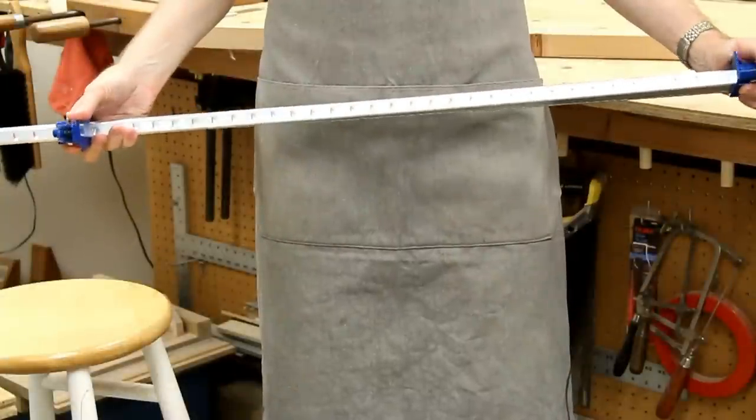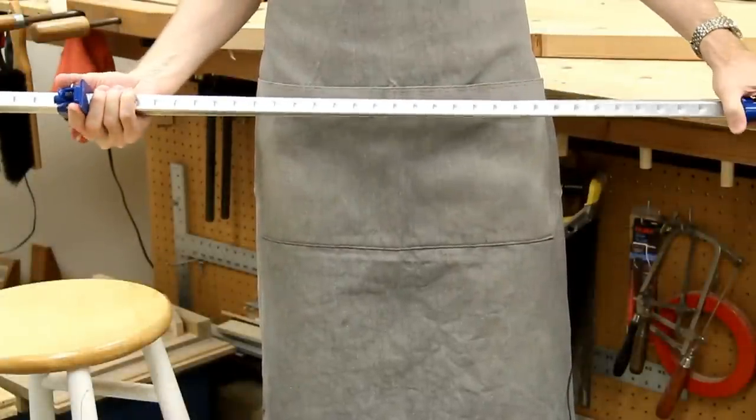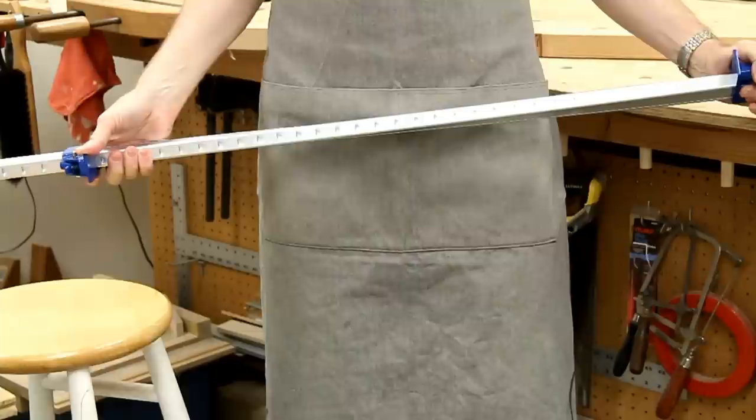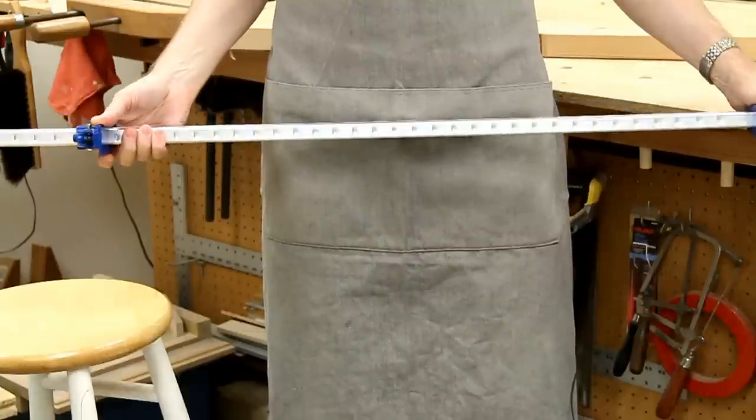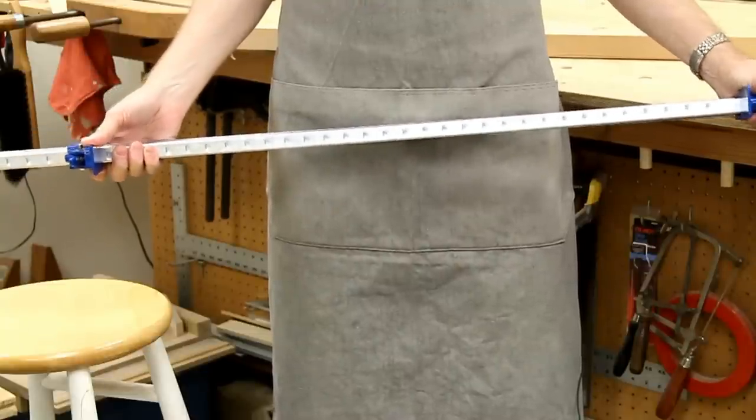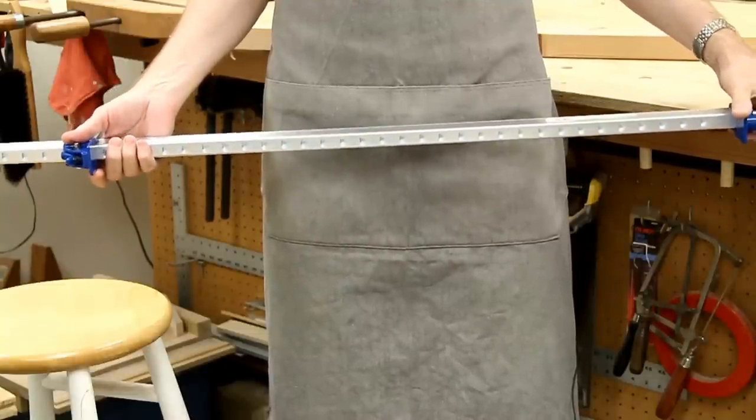You can see how easy these clamps twist under pressure, and this will happen when you're gluing up. The energy that's going into twisting the clamps is energy that's not going into your glue up.